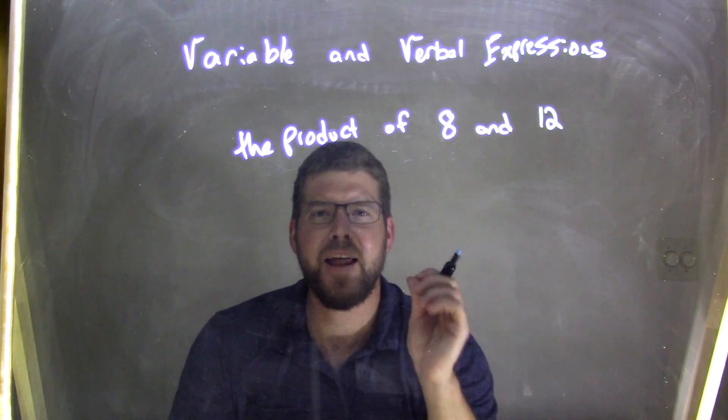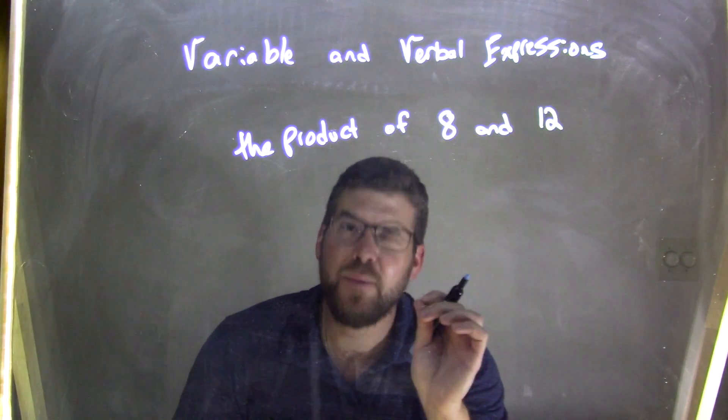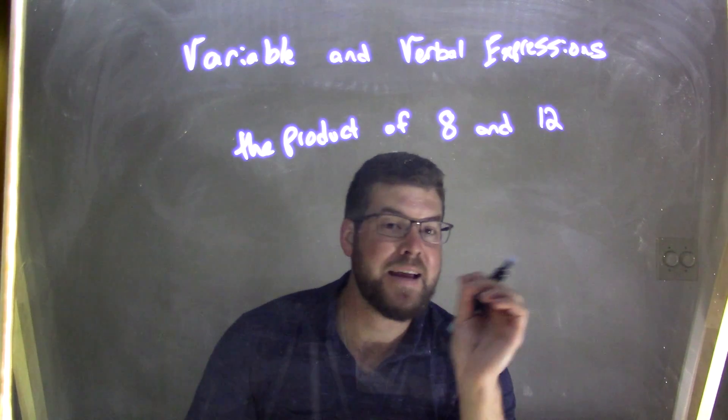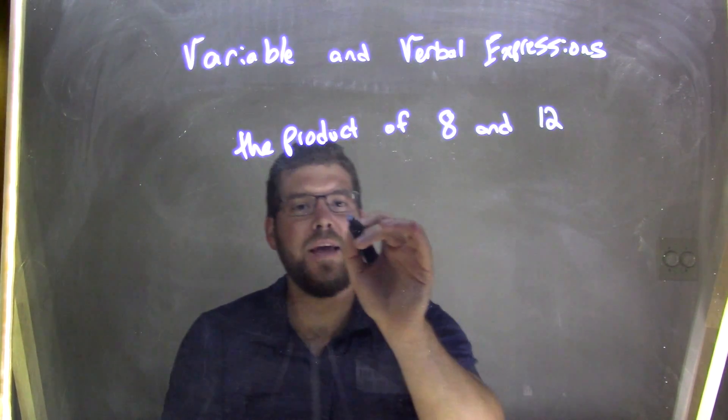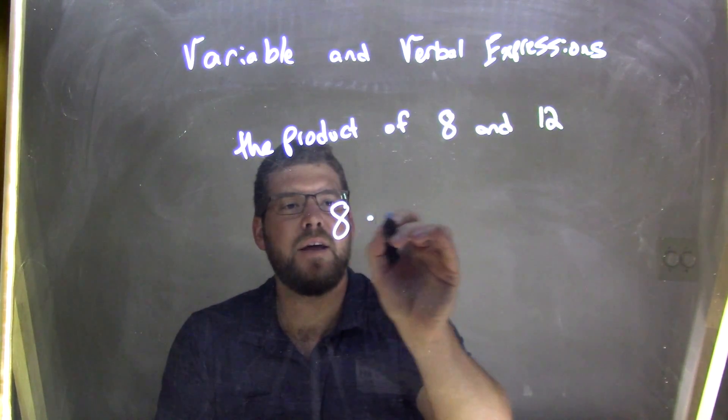The product—the first thing I'm thinking in my head is multiplication. So I'm thinking multiplication. The product of 8 and 12, well 8 comes first, so 8 and 12.